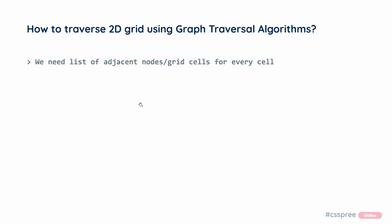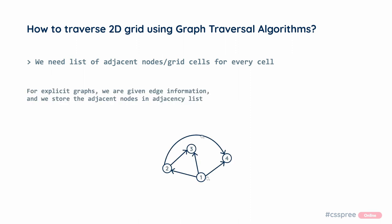We have to use the adjacency list concept, so we have to use the grid cell and the list of adjacent nodes. We have to use the explicit graph as well. When there is a graph problem, we have to use the exact information. First, we have to use the 1D array and the adjacency list, which is the neighbor.